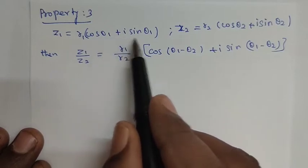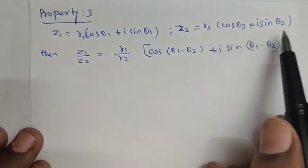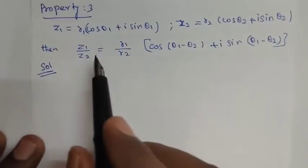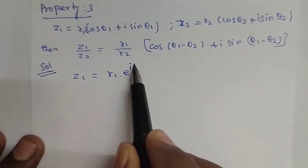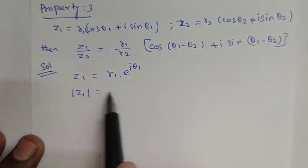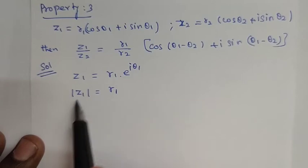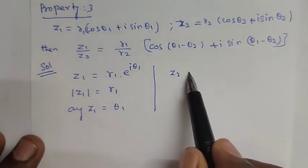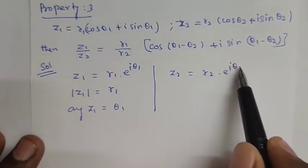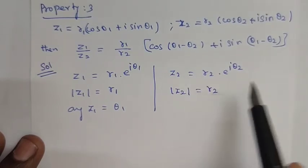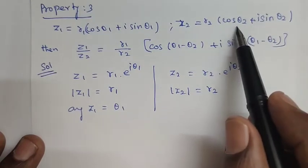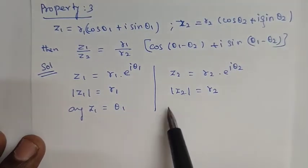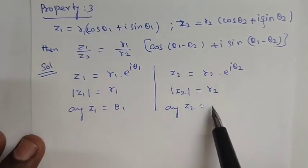Z1 is equal to r1 into e to the power of i θ1, so the modulus of z1 equals r1. Similarly, z2 equals r2 into e to the power of i θ2, so the modulus of z2 equals r2. This is verified as the square root of cos squared θ2 plus sin squared θ2, which equals 1, confirming the modulus.